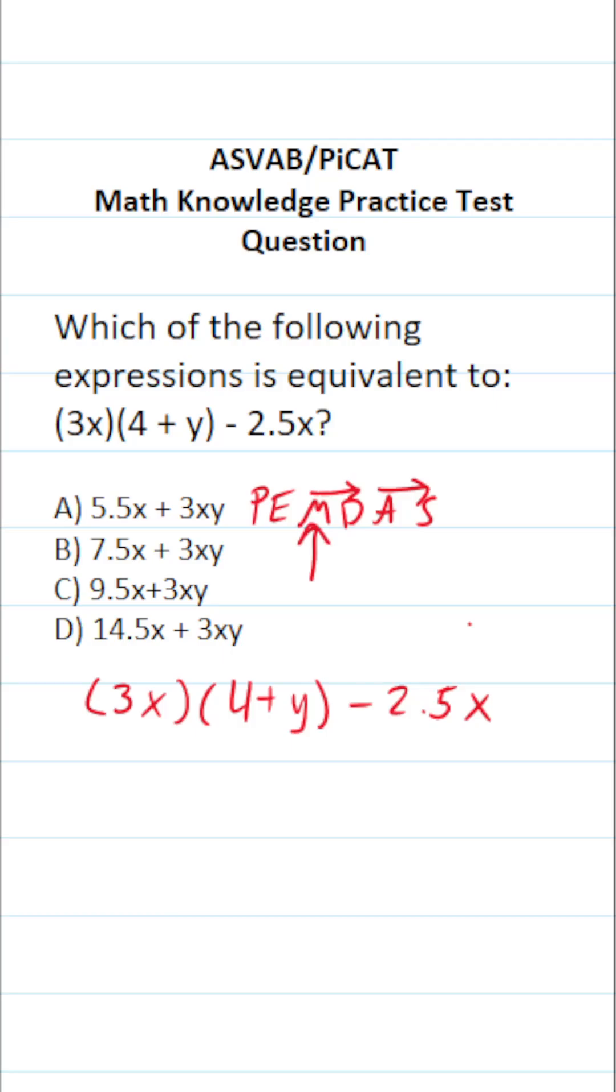So in this case we're going to do our multiplication before our subtraction, which means we're going to take this 3x and distribute it here and here.